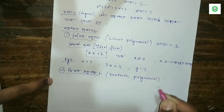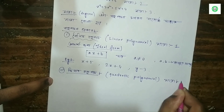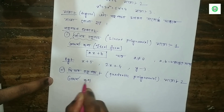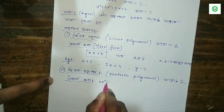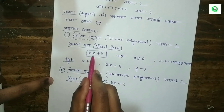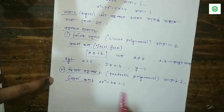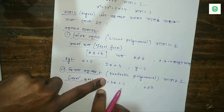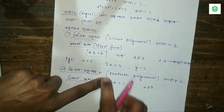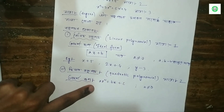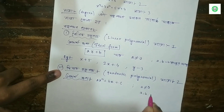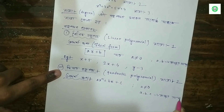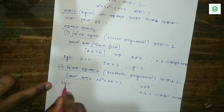Polynomial — that means the degree is 2. We are going to use ax squared plus bx plus c, where a is not equal to zero. a, b, and c are real numbers. This is a quadratic polynomial.